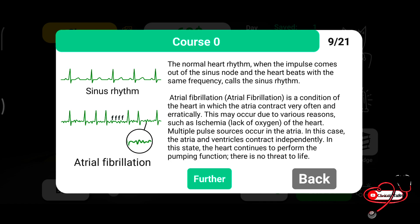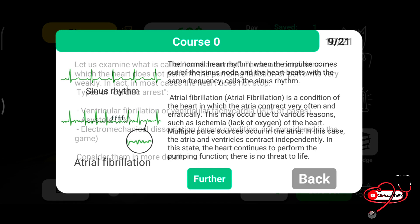Atrial fibrillation is a condition of the heart in which the atria contract very often and erratically. It may occur due to various reasons such as ischemia of the heart, with multiple pulse foci occurring in the atria. In this case, the atria and ventricles contract independently. However, the heart continues to perform pumping functions — this is not a life-threatening state.